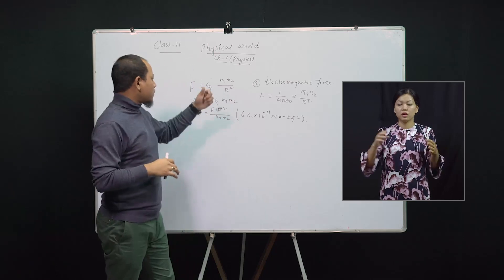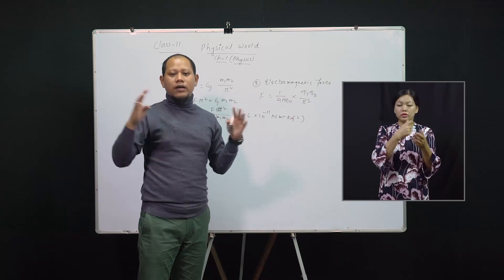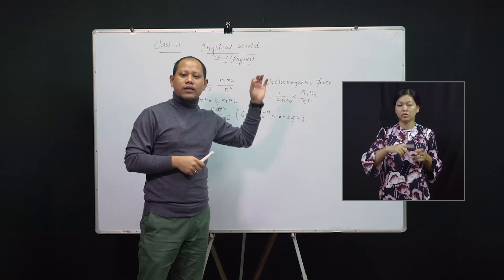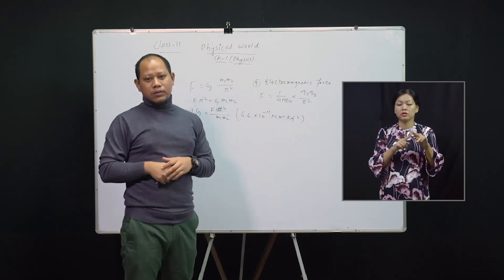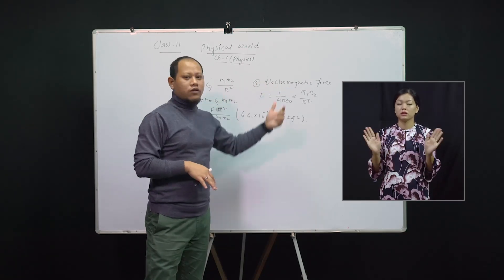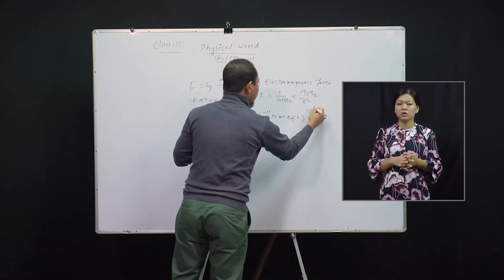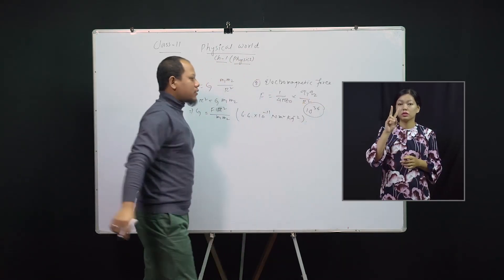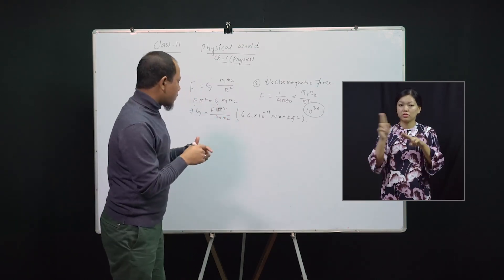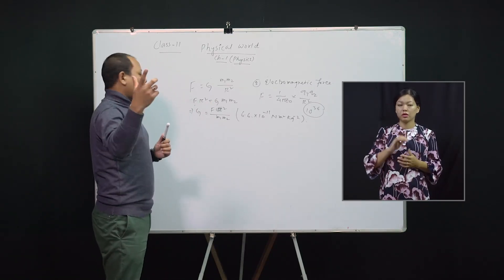The electromagnetic force is a long-range force — its range is up to infinity. Similarly, gravitational force also has a range up to infinity, making it a long-range force. Electromagnetic force is also a field force and conservative in nature. In comparison to gravitational force, the electromagnetic force is almost 10³⁶ times larger. Now let's discuss the strong nuclear force.